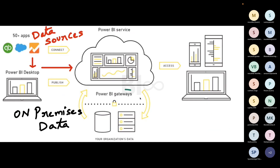This is the architecture of Power BI. We have different data sources which you take to Power BI Desktop. You do report development — data modeling, transformations in Power Query — and develop visualizations using the visuals available. Once development is done, you publish reports to Power BI Service, which is our cloud platform. Your business will access these reports from mobile devices or tablets. Between your data sources and Power BI Service there are gateways, which we will discuss in detail in later sessions.